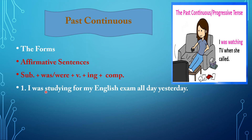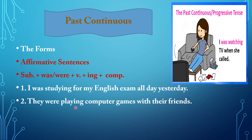Example: I was studying for my English exam all day yesterday. I is the subject; was, then study with -ing added — the main verb — and the complement. Second example: They were playing computer games with their friends. They is the subject, followed by verb to be were, then play with -ing and the complement.